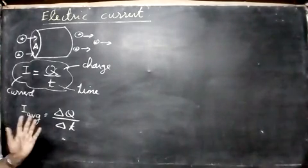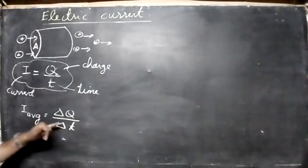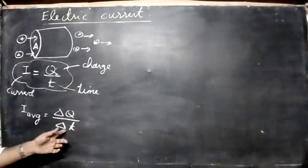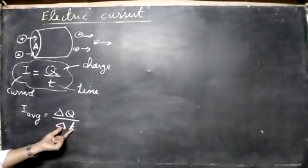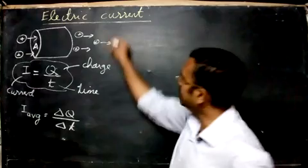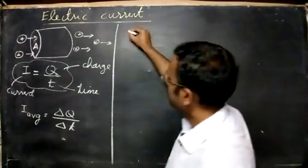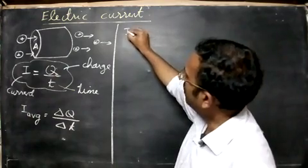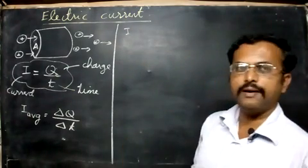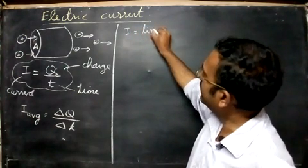That's the meaning of that, an average current there. Now what we must do is we must remove the delta sign. For that we take limits here. We take the delta time very small, it approaches zero. So we take limits. I average or you can take the full current now. I'm going to take the current flowing through. For that I write as limits.